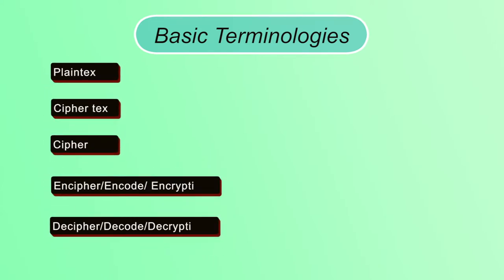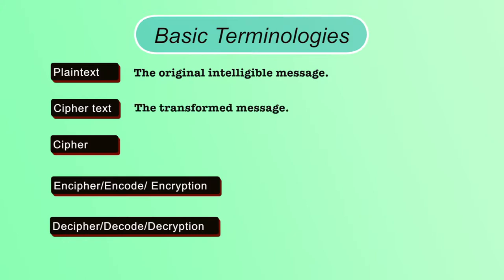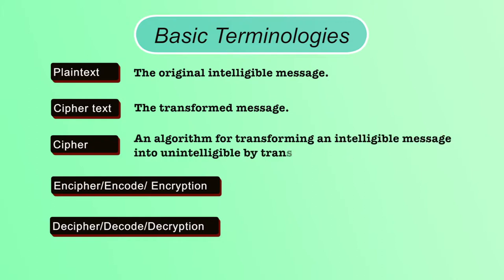Basic terminologies: Plaintext is the original form of the message which can be easily understood. Ciphertext is the converted form of the original message which cannot be understood by the attacker. Cipher is an algorithm for converting plaintext to ciphertext with the help of transposition and substitution ciphers. In substitution cipher, a block of plaintext is replaced by ciphertext, and in transposition cipher, the letters of plaintext are shifted about to form the cryptogram.